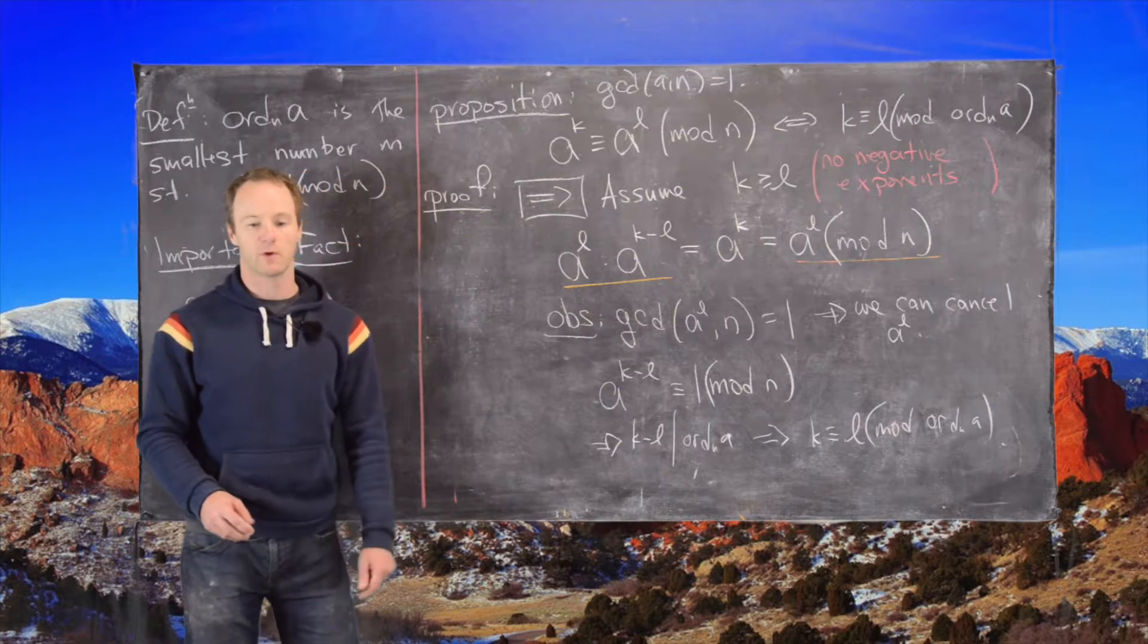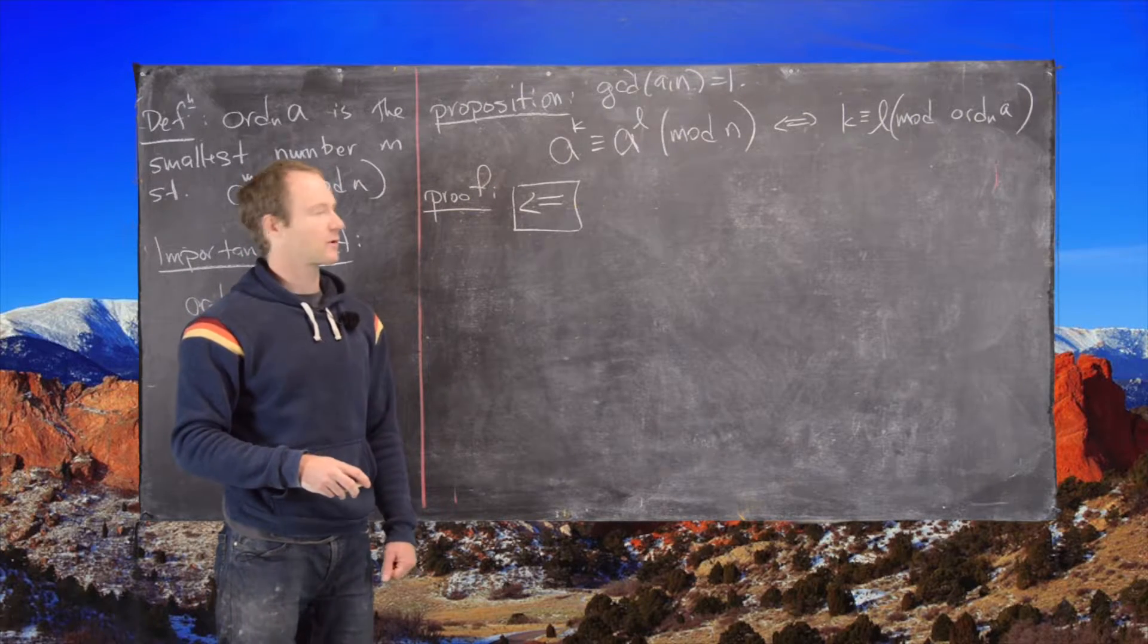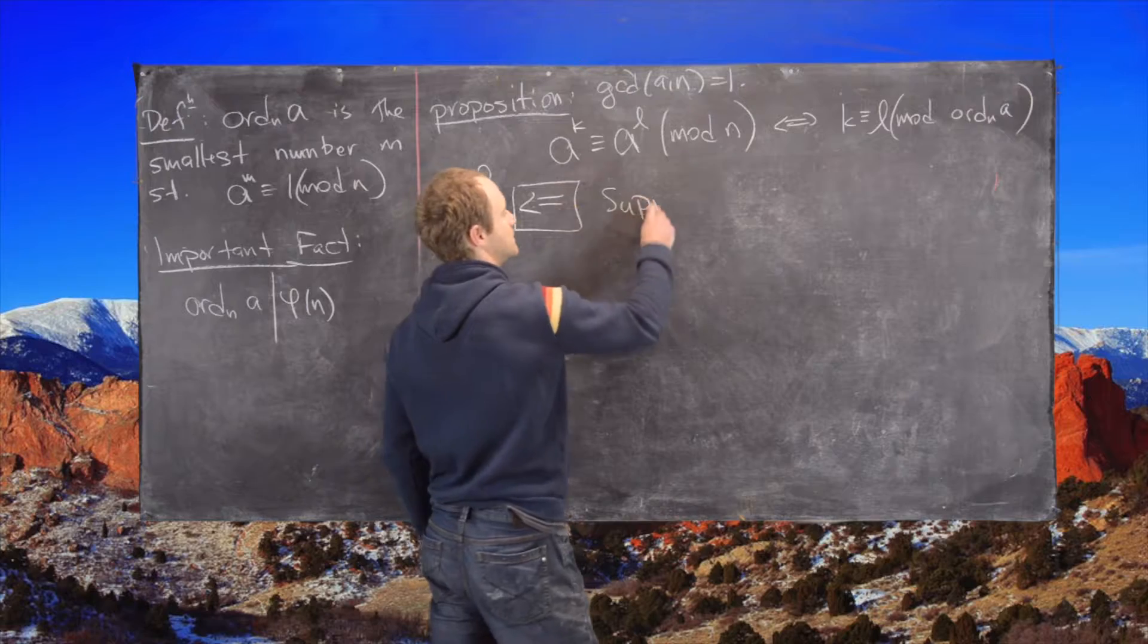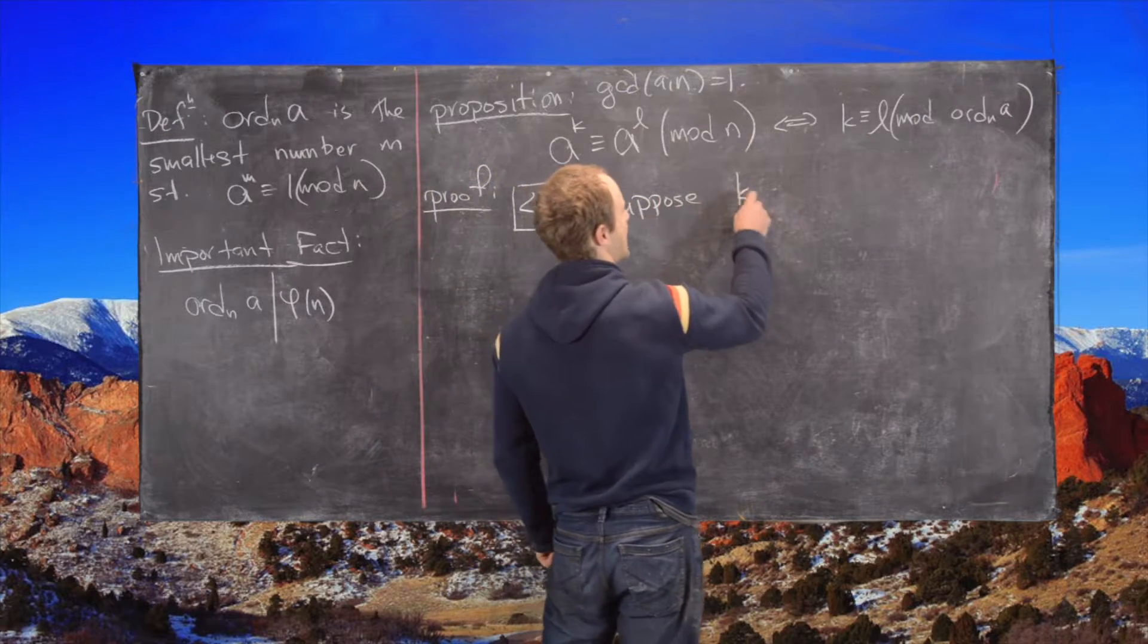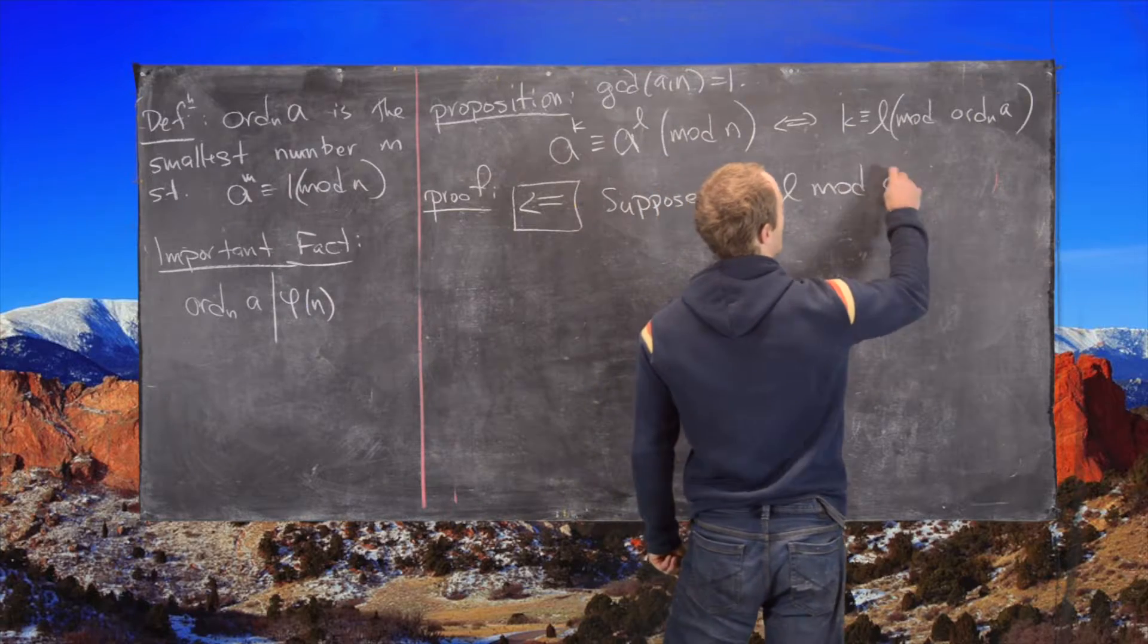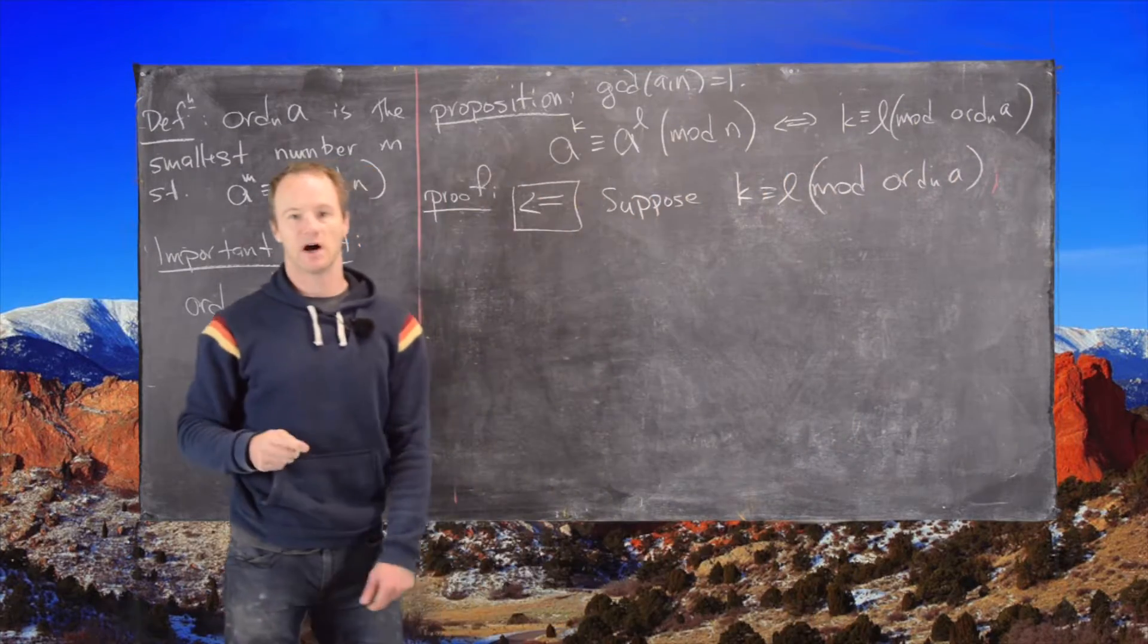Okay, so I'll clean up the board and then we'll do the reverse direction. Okay, so now we're ready for the reverse direction of this proof. So let's suppose that k is congruent to l mod the order of a modulo n.